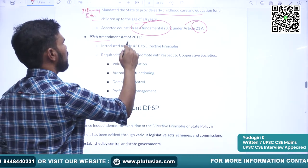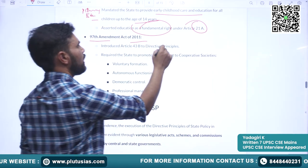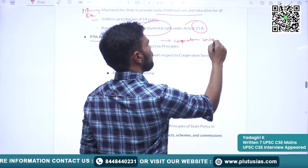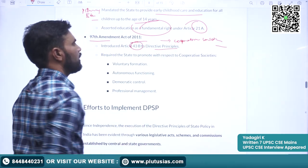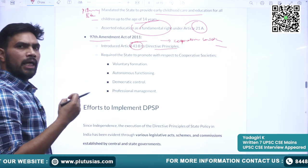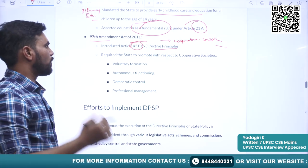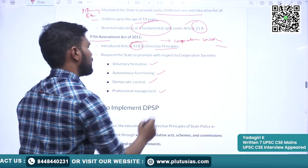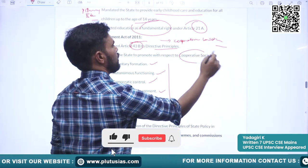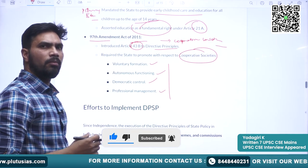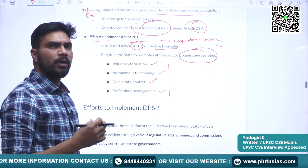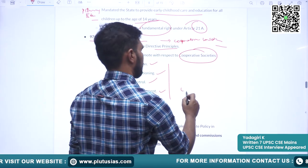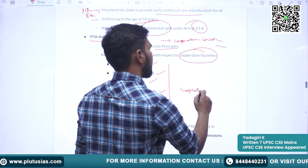The 97th Amendment Act of 2011 is basically about cooperative societies. It introduced Article 43B in Directive Principles of State Policy. It asks the state to promote voluntary formation, autonomous functioning, democratic control, and professional management of cooperative societies. This amendment asked the government to strive hard for achieving the spirit of cooperation and developing rural India through the principles of cooperation.